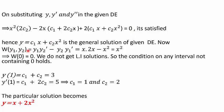Now let's find the Wronskian. On substituting y1, y1', y2, y2', it comes out to be x². This Wronskian will only be 0 when x = 0; otherwise it is non-zero, so we get linearly independent solutions only for x ≠ 0. This explains the condition on any interval not containing 0. To find the particular solution with y(1) = 3 and y'(1) = 5, substitute x = 1 in y and y' and solve simultaneously. We get c1 = 1 and c2 = 2, so the particular solution is y = x + 2x².